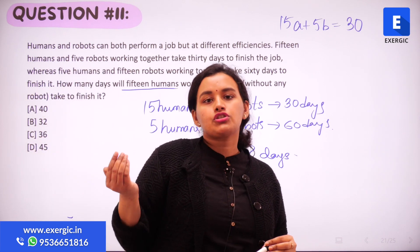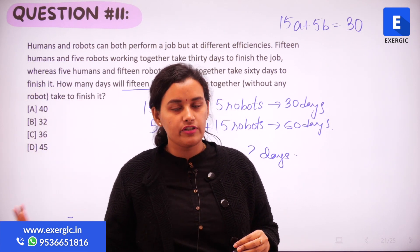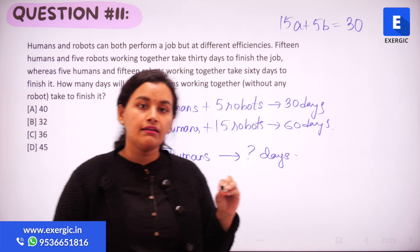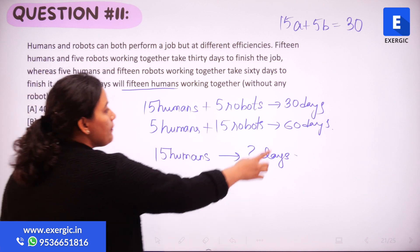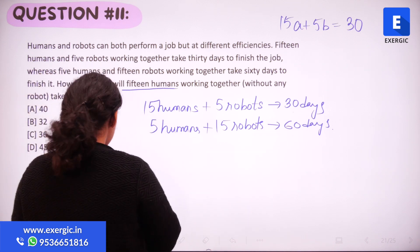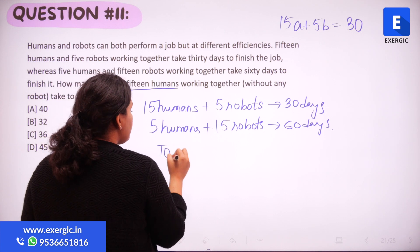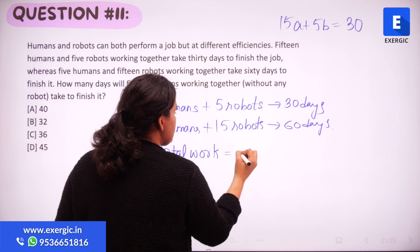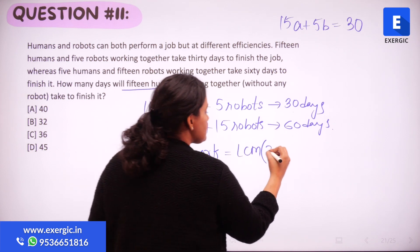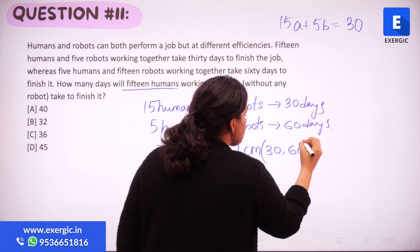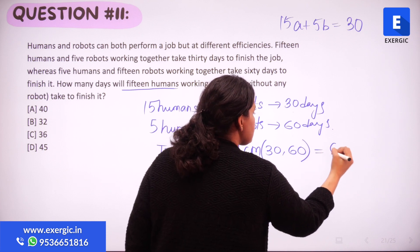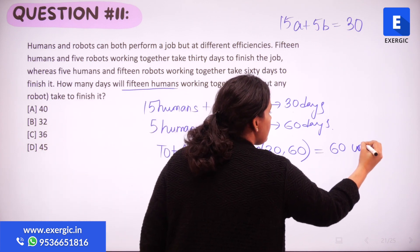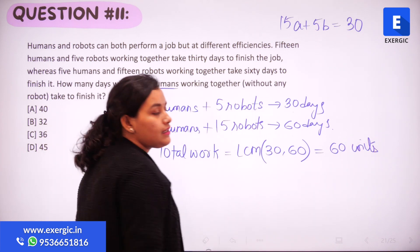One approach is to define work as one unit, which we had seen in the previous example. Another approach is to take work as the LCM of the number of days involved. So I take the total work to be done as the LCM of 30 and 60, which is 60 units.